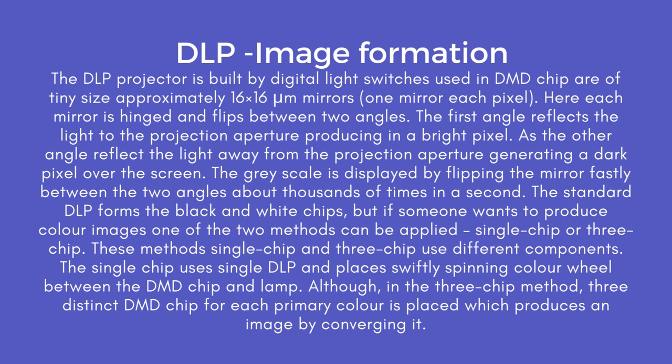The standard DLP forms black and white images. But if someone wants to produce color images, one of two methods can be applied: single chip or 3-chip. These methods use different components. The single chip uses a single DLP and places a swiftly spinning color wheel between the DMD chip and lamp. In the 3-chip method, three distinct DMD chips for each primary color are placed, which produces an image by converging them.